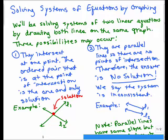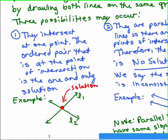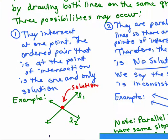Three possibilities may occur. One, they could intersect at one point and then the ordered pair that is at that point of intersection is the one and only solution. So here's an example. I've got line 1 and line 2 and they cross at exactly one ordered pair. Whatever that ordered pair is, that would be your solution. There's some value for x and y, and then you'll have your solution to the system.